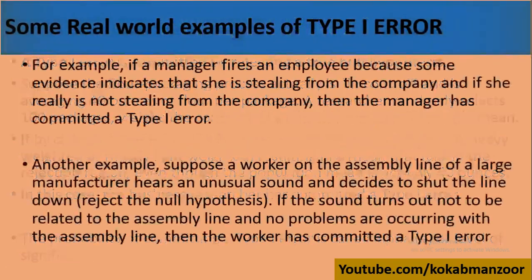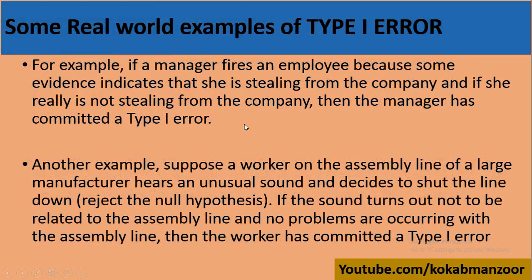Type 1 Error کی مزید examples: ایک manager نے کسی خاتون پر چوری کا شک کیا اور اسے نکال دیا، حالانکہ وہ چور نہیں تھی — یہ Type 1 Error ہے۔ اسی طرح assembly line میں کوئی آواز آئی، کسی نے سمجھا کہ assembly line سے شور آ رہا ہے اور اسے stop کر دیا، حالانکہ assembly line میں کوئی error نہیں تھا — یہ بھی Type 1 Error ہے، کیونکہ production کا نقصان ہوا۔